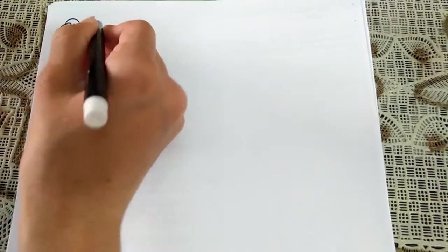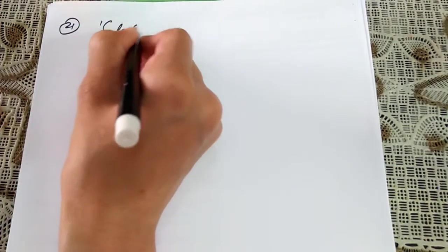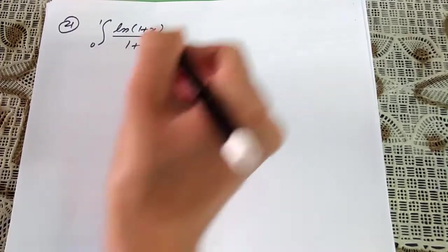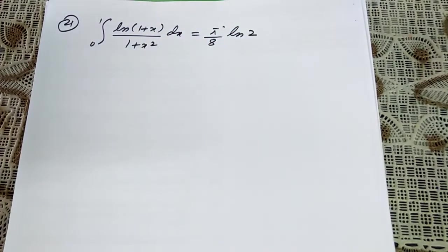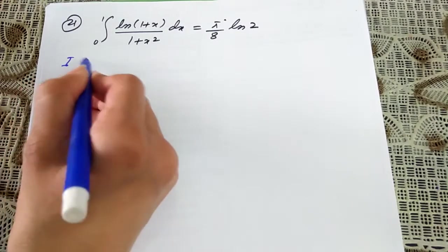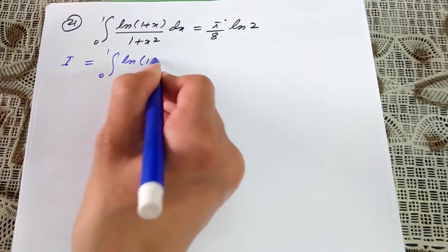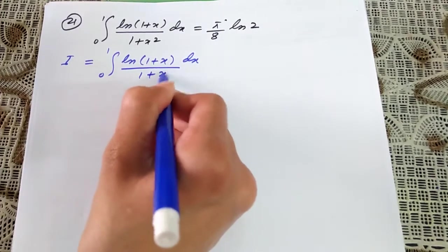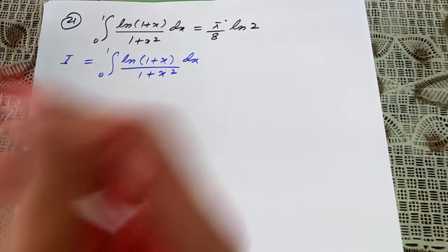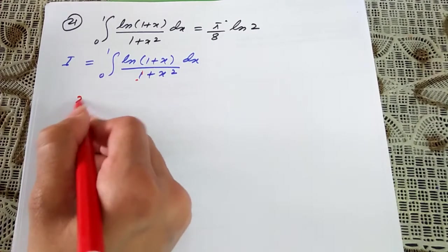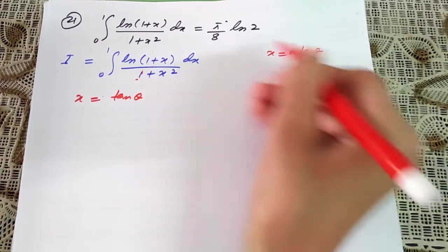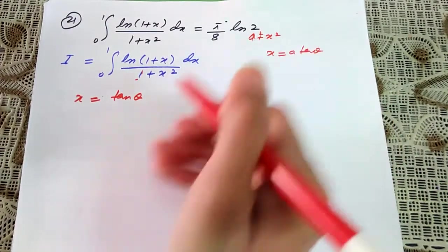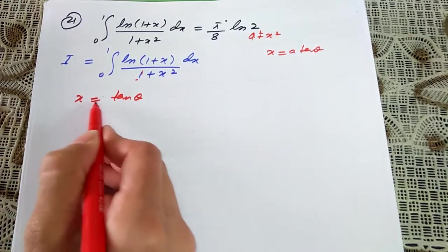Question number 21: prove that the integral from 0 to 1 of ln(1 plus x) over 1 plus x² dx equals π/8 times ln 2. Let i equal this integral from 0 to 1 of ln(1 plus x) dx over 1 plus x². Because of the 1 plus x² denominator, I use the substitution x equals tan θ, giving dx equals sec²(θ) dθ.